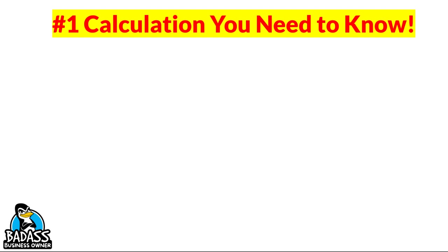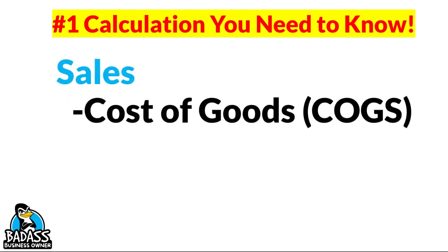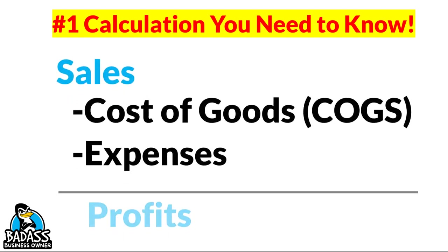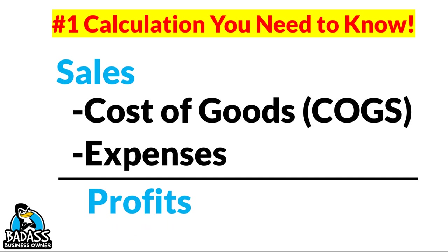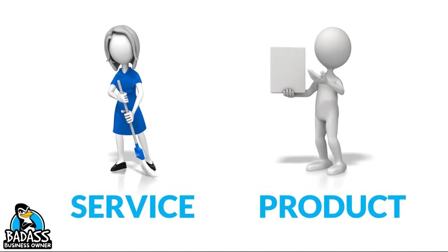The first thing we have to do is lay some groundwork. The number one calculation you need to know is: sales minus cost of goods minus expenses equals your profits. It's not only on your profit and loss statement, but it is the basis for your pricing — whether you have a service-based or product-based business. You can use this quick pricing method either way.